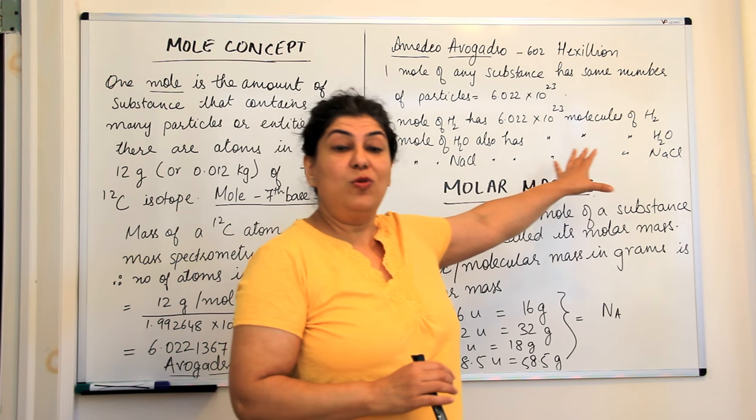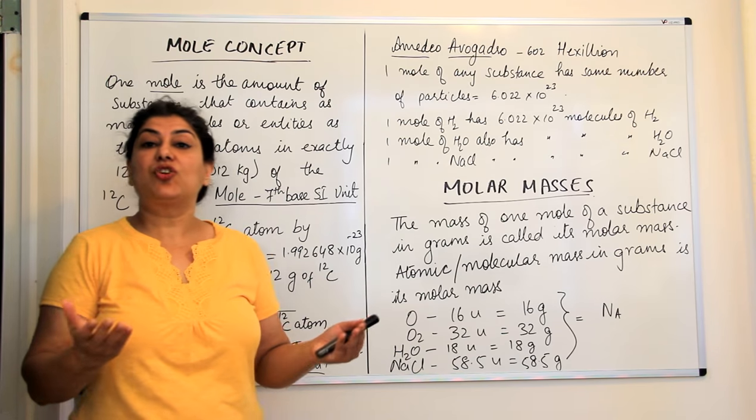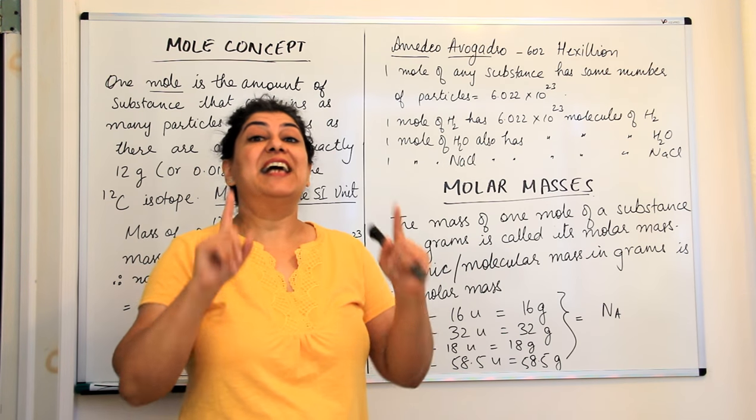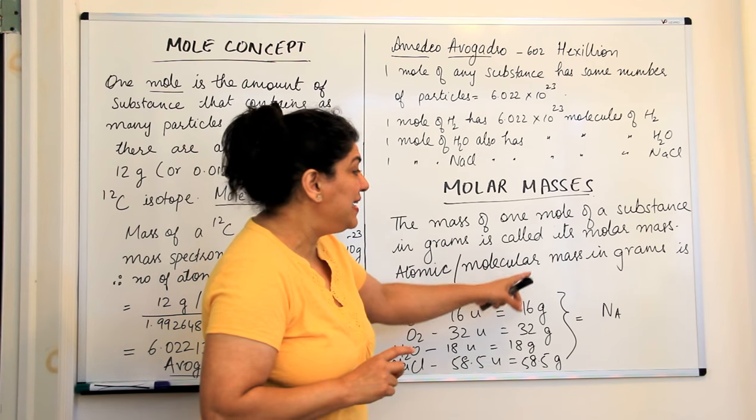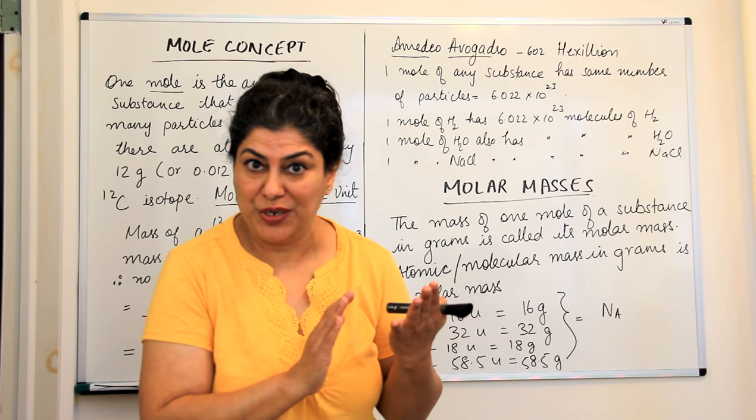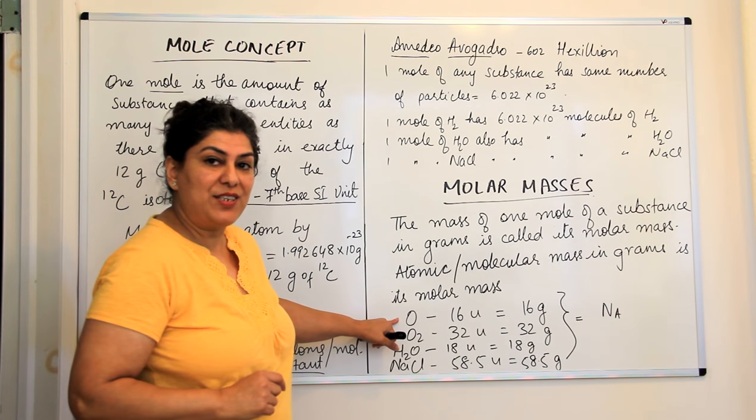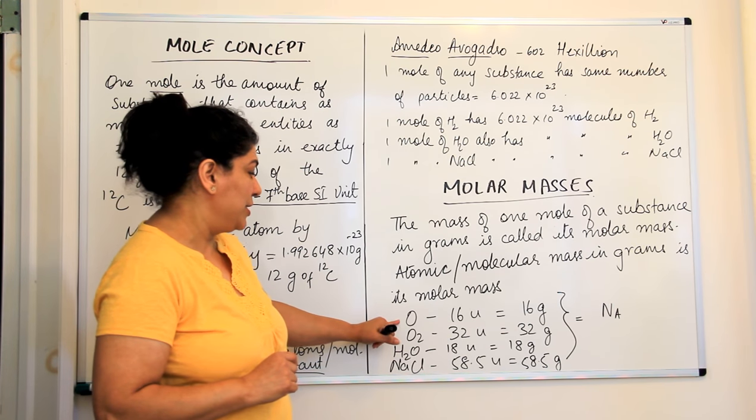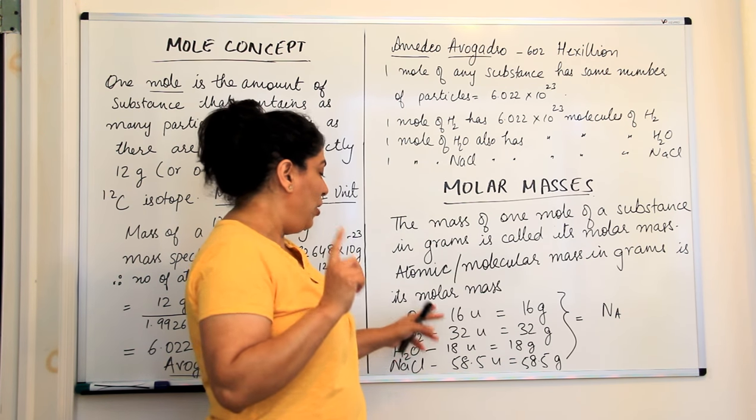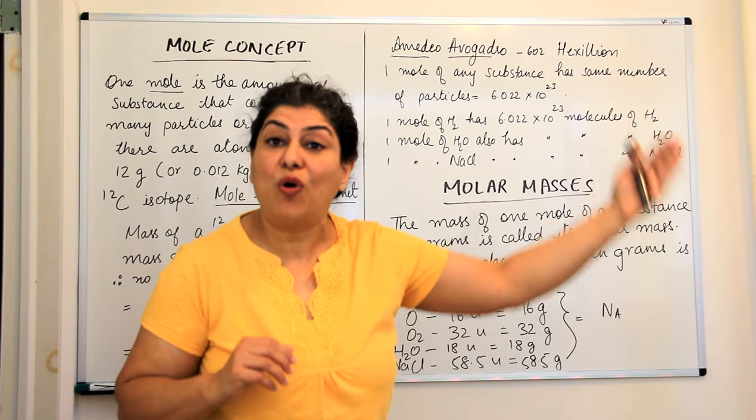So, these masses are now called the molar masses. Let me just explain it. The mass of one mole of a substance in grams is called its molar mass. The mass of one mole of any substance is called its molar mass and surprisingly, the molar mass is always equal to its atomic or molecular mass which was given in atomic or molecular mass units to be equal to grams, equal number of grams. For example, oxygen atom has a mass of 16 unified masses or atomic mass units. If you take 16 grams, that will be its molar mass, that will be 1 mole and 1 mole of oxygen will be 16 grams and it would have 6.022 into 10 to the power 23 atoms of oxygen always.